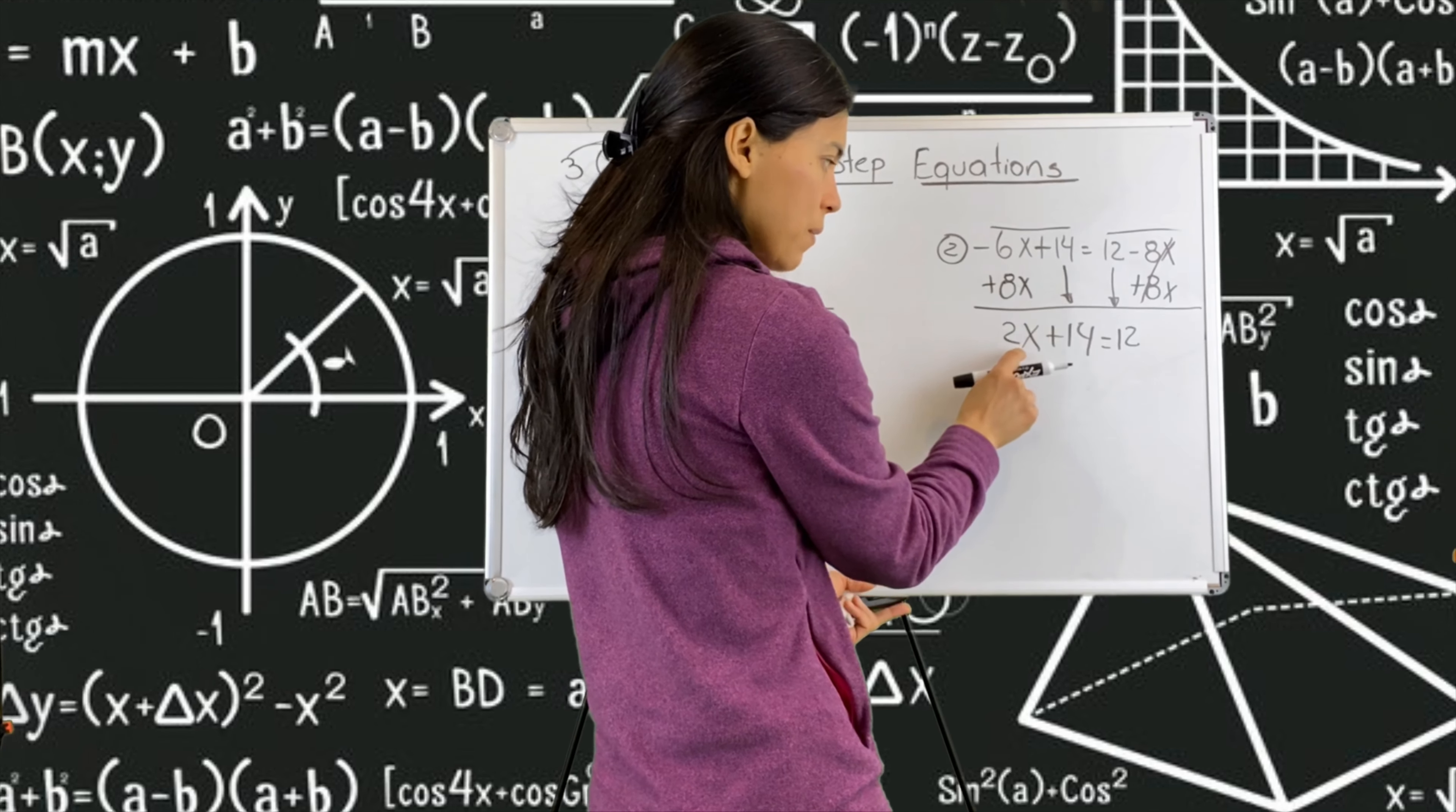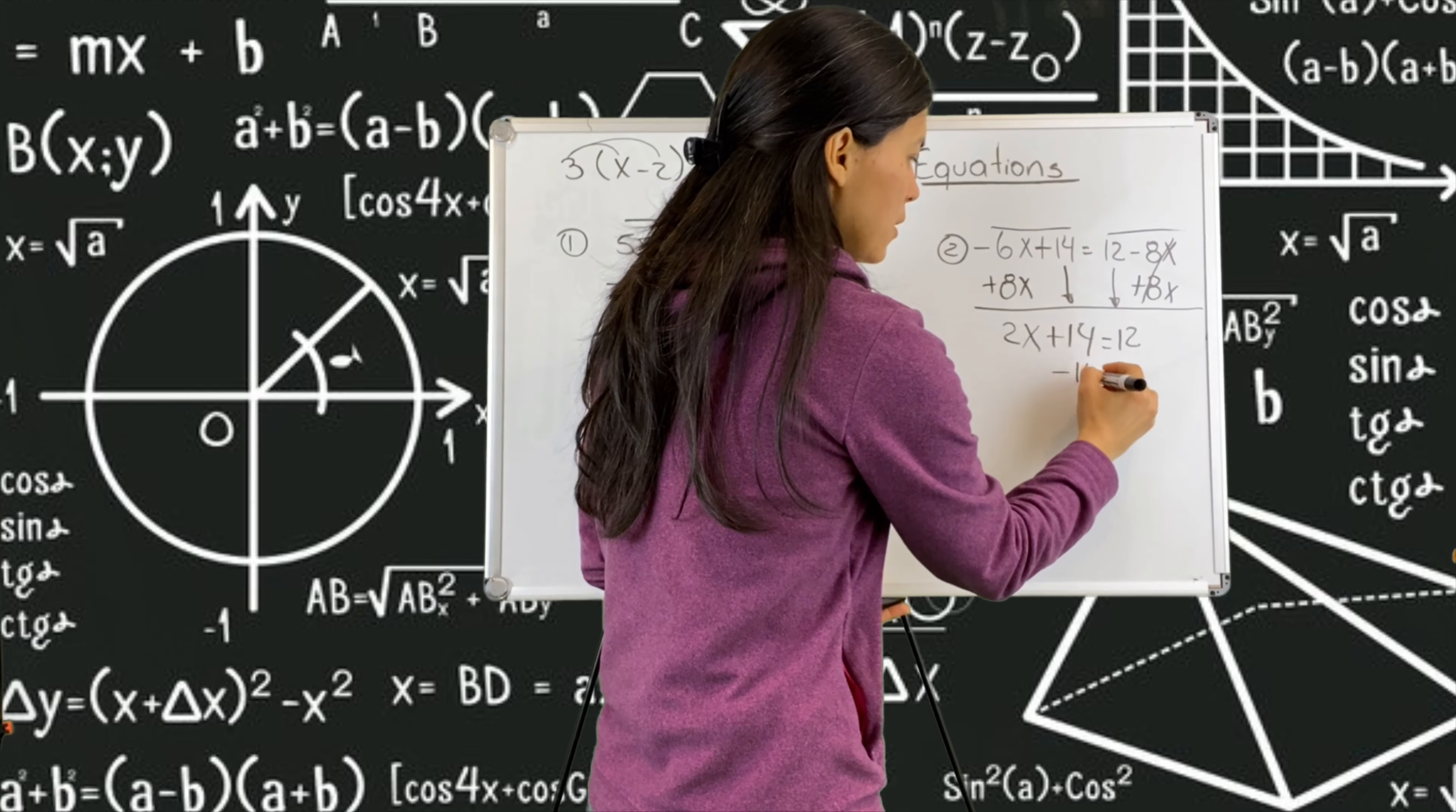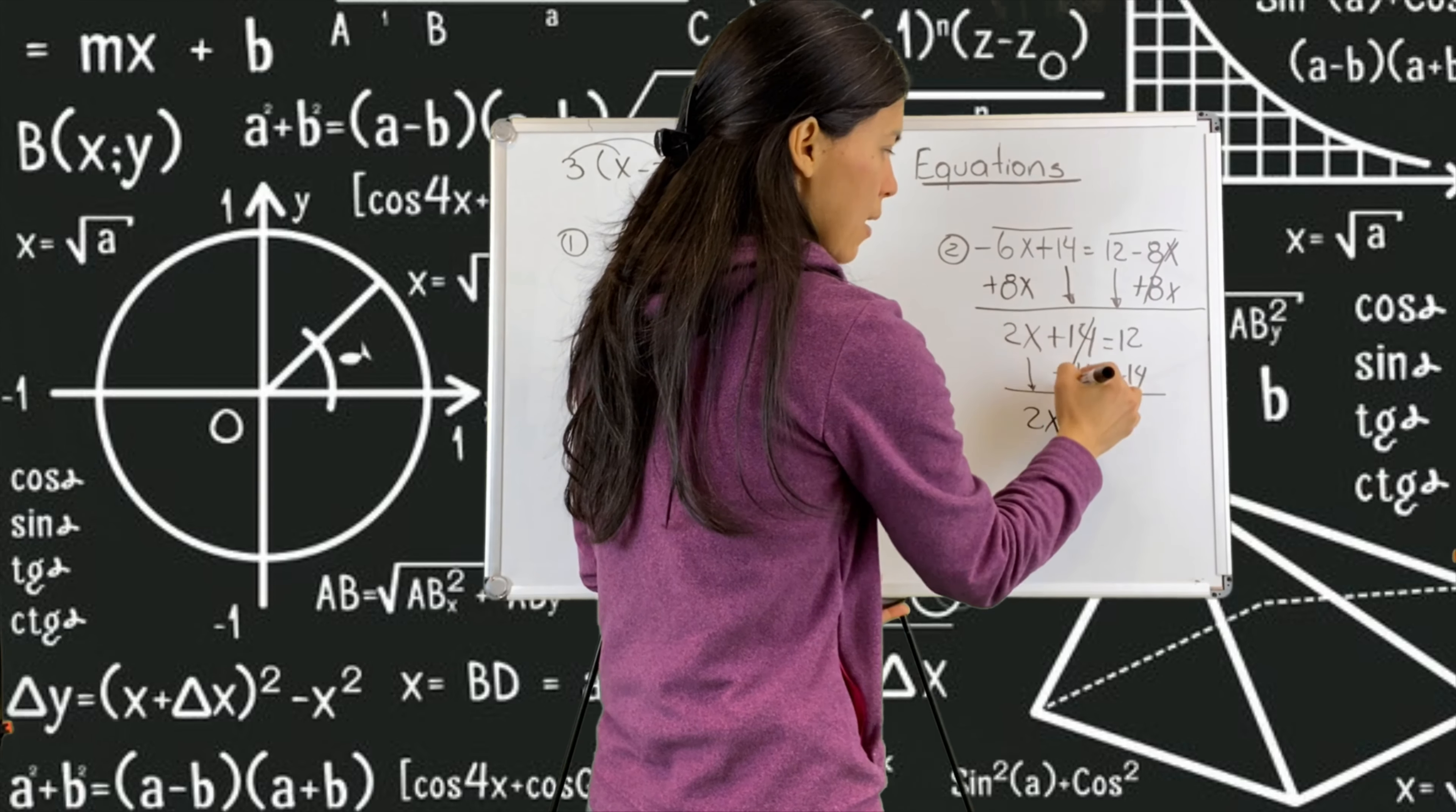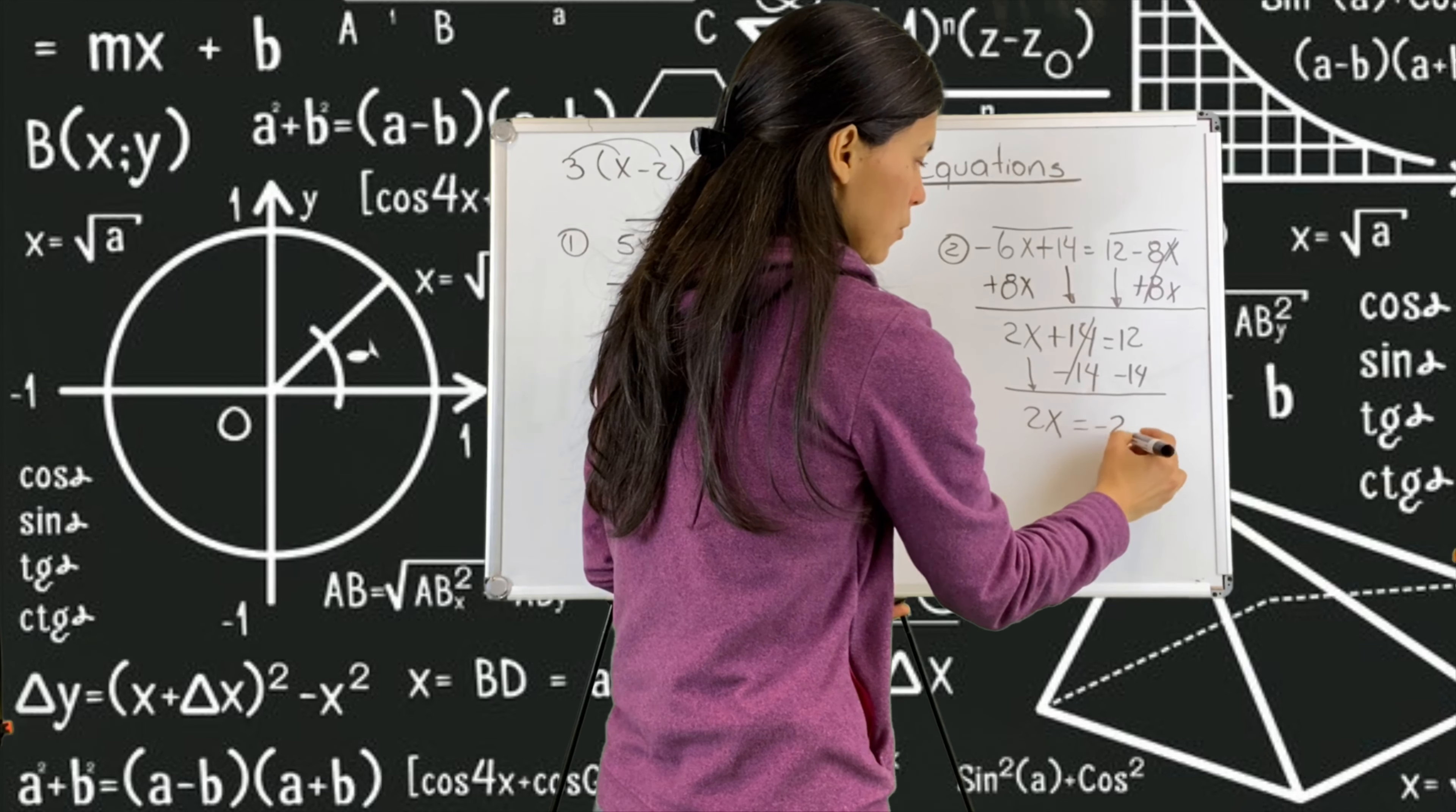Now I need to solve for x. So I need to get rid of that plus 14. And the opposite of plus is negative. I'm going to put negative 14 on both sides. I can bring down that two x. These two get cancelled. And it's equal. Put your calculator to 12 minus 14. And that will give you a minus two.